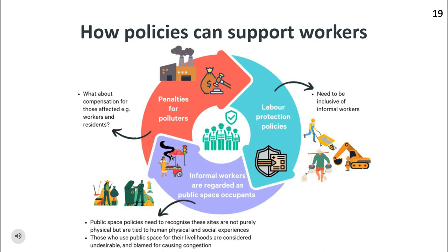The access approach in public space policies does not effectively address causes of air pollution, nor does it recognize exposure and impacts of air pollution on informal sector work. By framing public space simply as the physical location and its function, public space policies are unable to address air quality and its causes, and are also oblivious to human physical and emotional experiences associated with those spaces. Overall, there is a lack of legal mechanisms to protect informal workers against sources or impacts of air pollution, particularly when they do not or are unable to register for social security schemes.